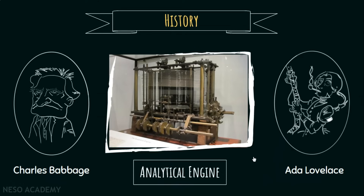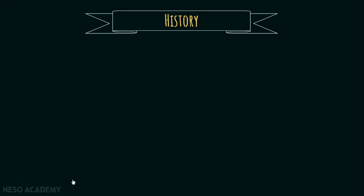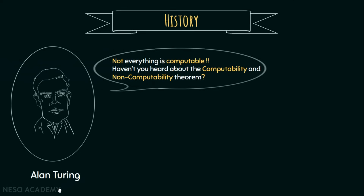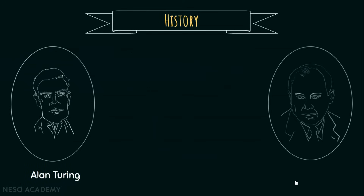Then comes the next big milestone: the advent of computability and non-computability. Alan Turing figured out which problems can be solved using computers. He has widely been considered as the father of computer science and artificial intelligence since then. Now alongside Turing, another name is very frequently associated with computation, and it is Johan von Neumann, more popularly known as John von Neumann.